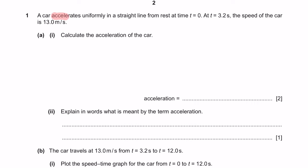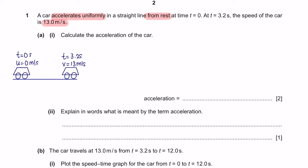Question 1. A car accelerates uniformly in a straight line from rest at time t=0. At time 3.2 seconds, the speed of the car is 13 meters per second. If we visualize this as a diagram, from rest meaning the initial velocity is 0 meters per second, and at time 3.2 seconds, the final velocity was 13 meters per second. Question A part 1: calculate the acceleration of the car.